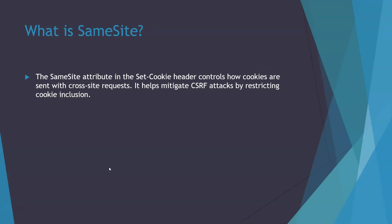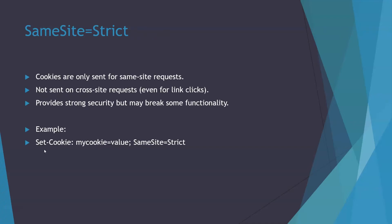The SameSite attribute in the Set-Cookie header controls how cookies are sent with cross-site requests. It helps mitigate CSRF attacks by restricting cookie inclusion in cross-site requests. For example, if the web app sends Set-Cookie with SameSite=strict, and the victim's browser visits an attacker-controlled domain that tries to send a cross-site request to the web app, the browser refuses to include the cookie. The cookie can only be sent if the request originates on the same site.